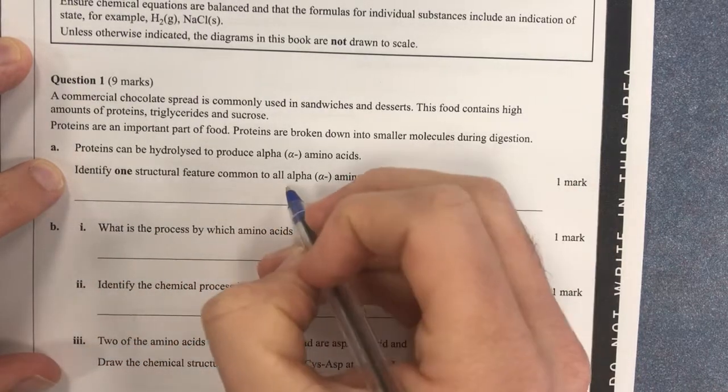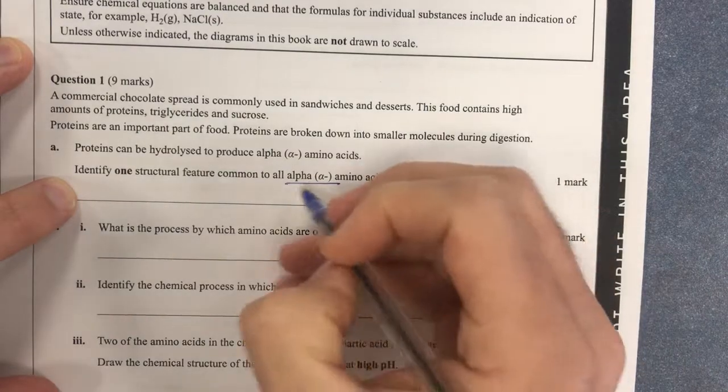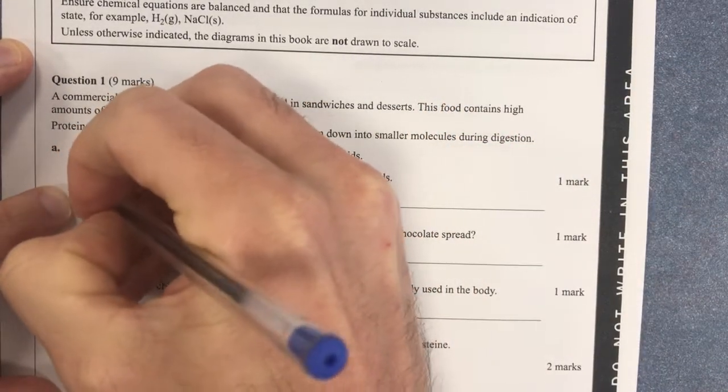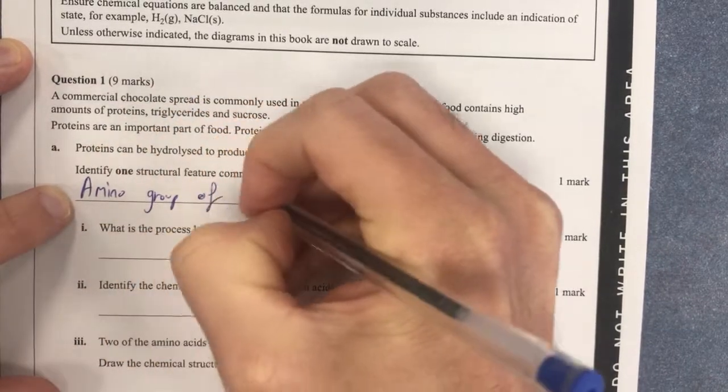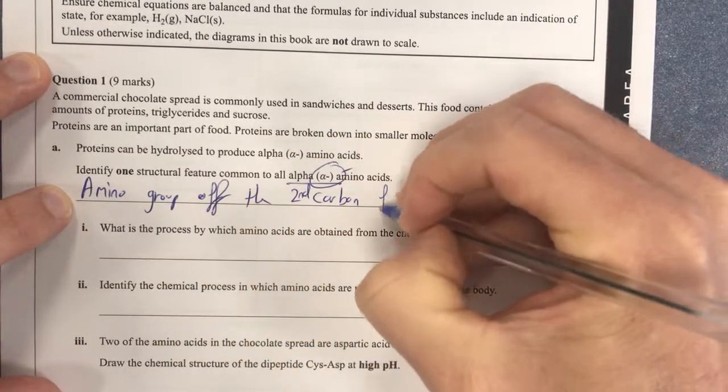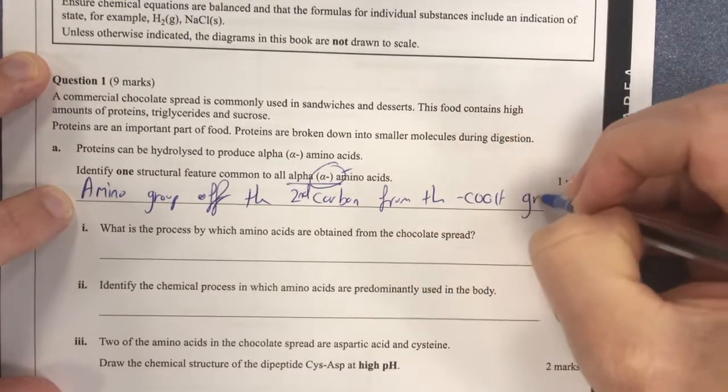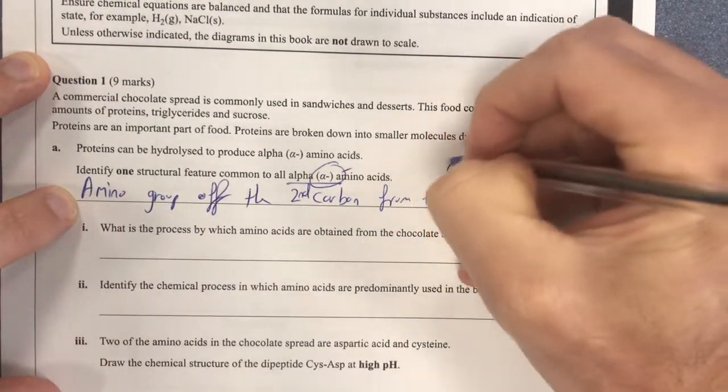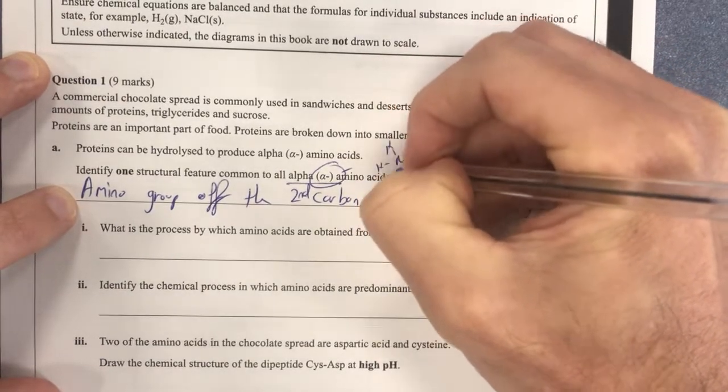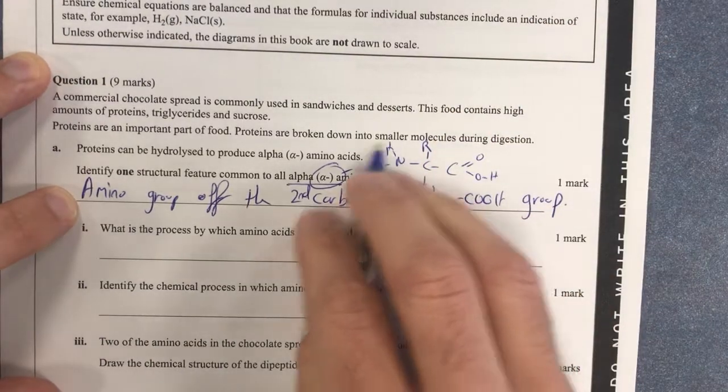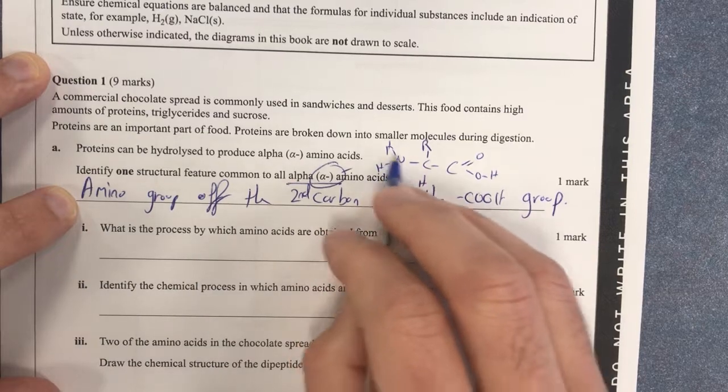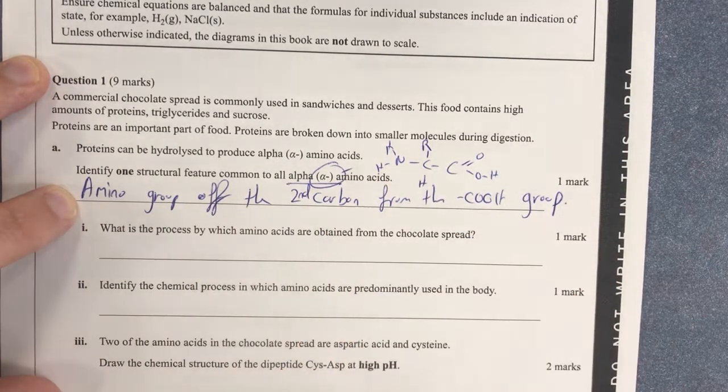Identify one structural feature common to all alpha amino acids. Alright, so what's common for all alpha amino acids? Well, alpha amino acids by definition have the amine group off the second carbon. So I'm going to say they have their amino group off the second carbon, second carbon from the COOH group. So that identifies the fact that we have this basic structure: COOH, C, and then NH2 and the R group. We have this amino group coming off this second carbon. That's what makes it an alpha amino acid.